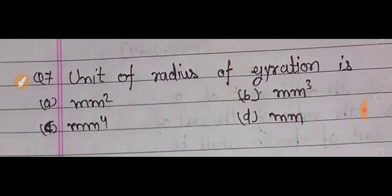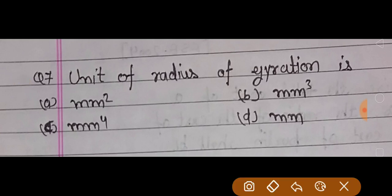अपना next question: unit of radius of gyration is? Radius of gyration की क्या unit होती है? तो इसका correct answer है mm4, अगर dimension mm में given है तो इसका correct answer होता है mm4.